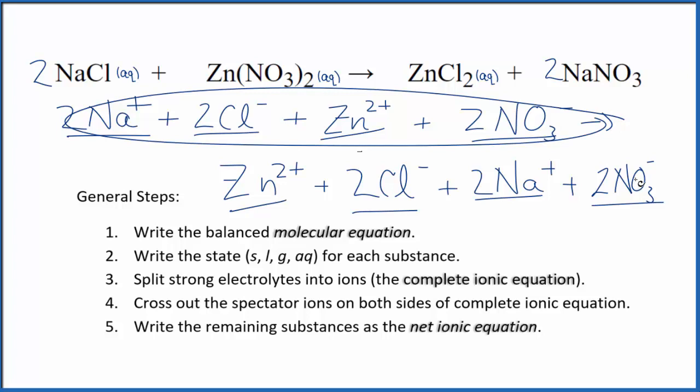So the reactants here are the exact same as the products. Nothing's changed. No reaction. So we tried to write the net ionic equation for sodium chloride and zinc nitrate. We can balance the equation, but really there's no reaction because no change has taken place. This is Dr. V and thanks for watching.